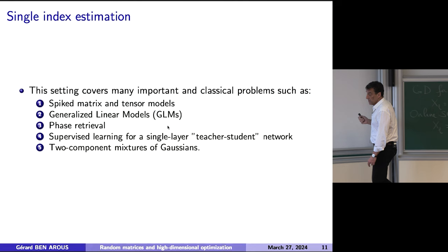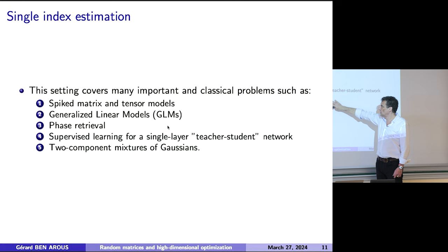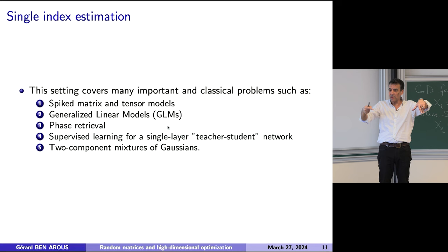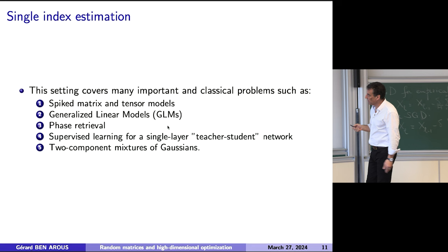This covers many important problems: spiked tensors or spiked matrices, tensor PCA, generalized linear models, phase retrieval, supervised learning for a single layer, and mixtures of two Gaussians — not three. If you have two, of course you have two bumps and the rank-one quantity is just the distance between them. So it's already a bunch of reasonable, still a little academic, but important problems.